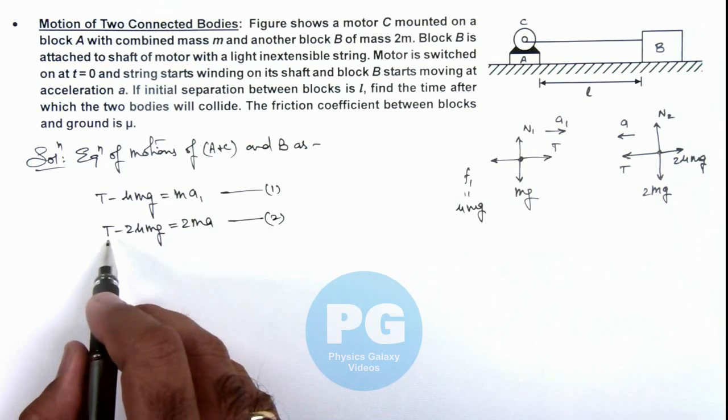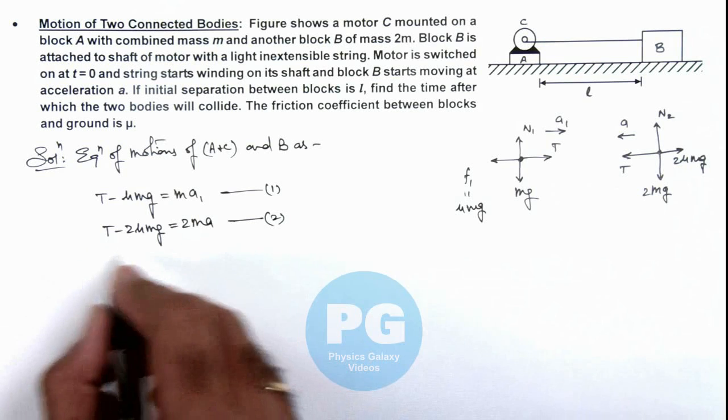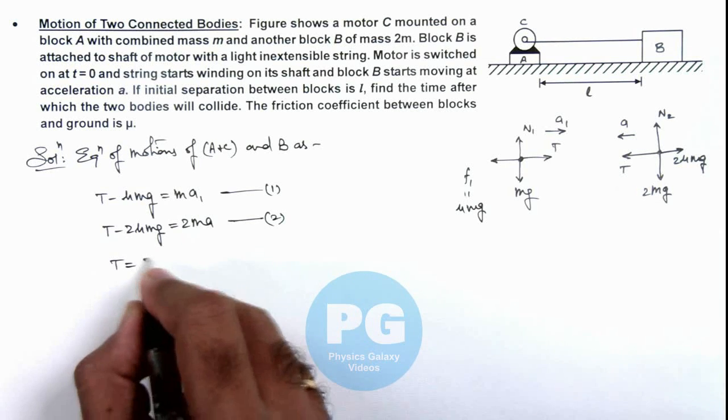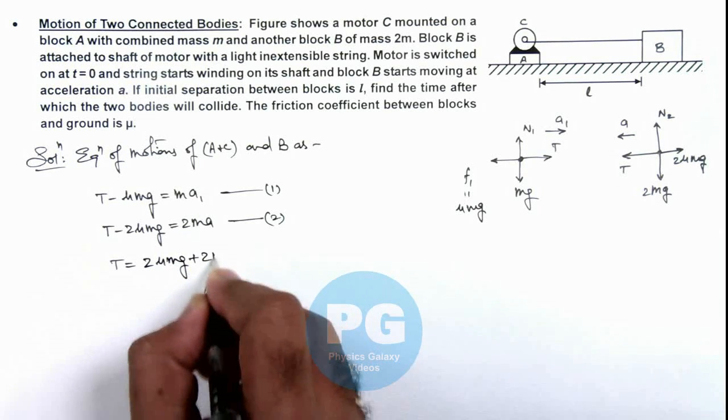If we calculate the value of T from this equation, you can see the value of T we are getting is 2μmg plus 2ma.